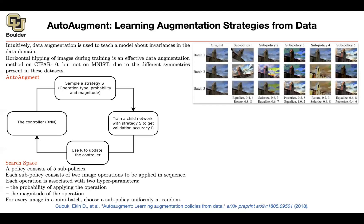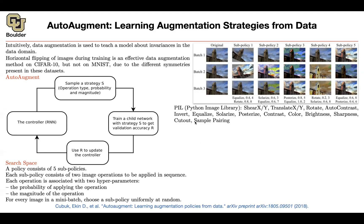That's your original image. You have a sequence of 5 sub-policies, and when searching for your optimal augmentation, you are going to apply only one of these at a time — not all 5 in sequence, just one. Your choices include, for instance, equalize or rotate with a given probability and rotation magnitude of 8, or you can equalize, solarize, posterize, equalize, rotate. Where do these operations come from? Many of you are probably using the PIL package — the Python Image Library — which gives you a list of augmentations you can apply to your images.